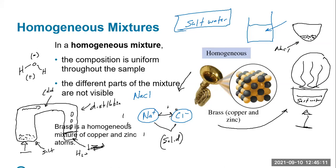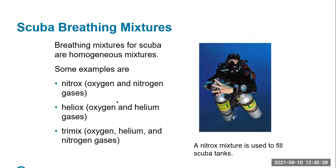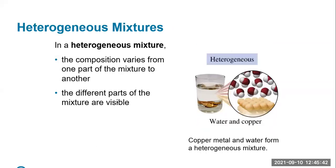Homogeneous mixtures are mixtures that when mixed look like one phase — you really don't see the different components. Here are some examples of homogeneous mixtures, including obviously your scuba gear and tanks. The other type of mixture is a heterogeneous mixture. In a heterogeneous mixture, when we mix the substances together, we actually do see distinct different layers — we can visually see that.